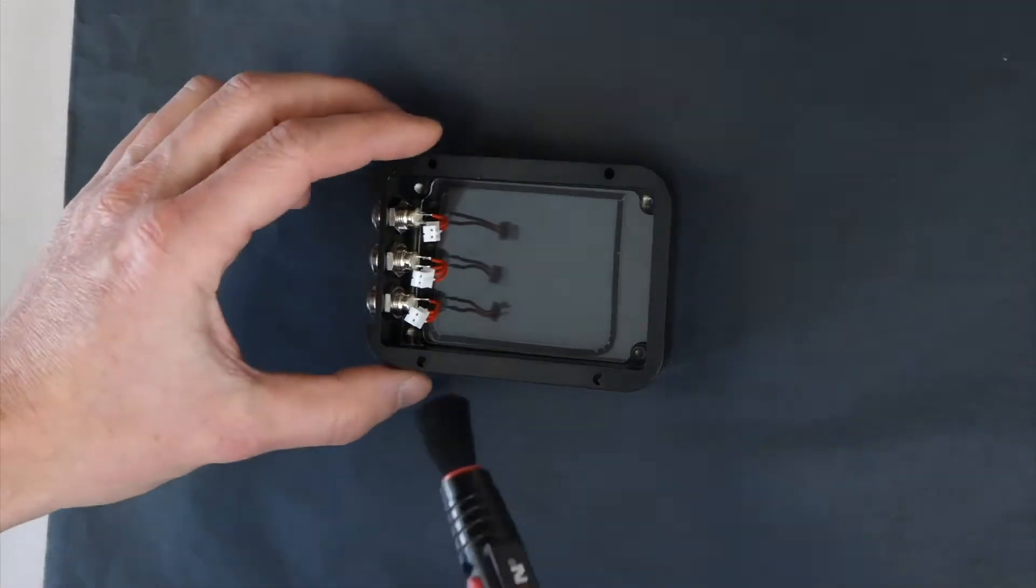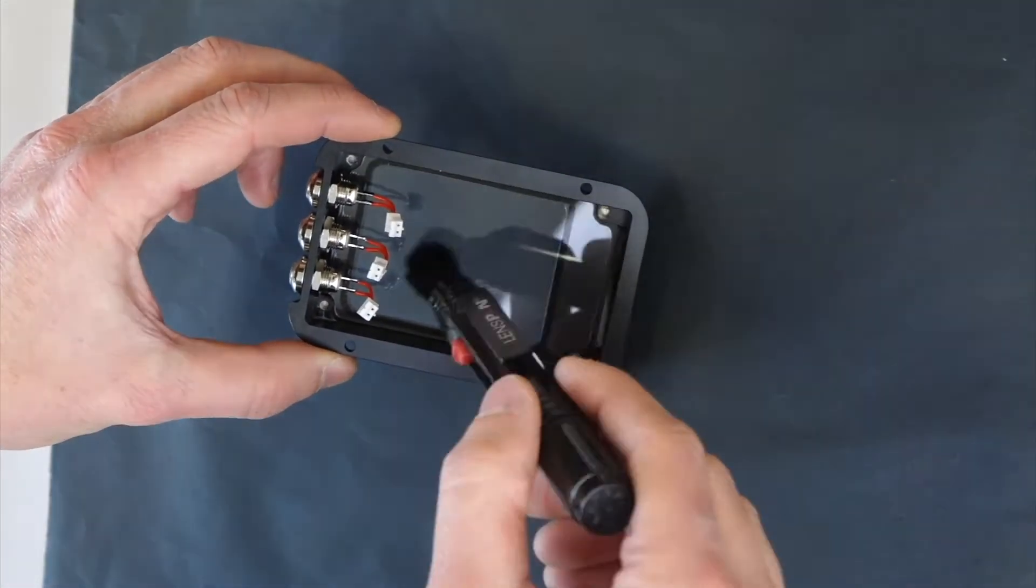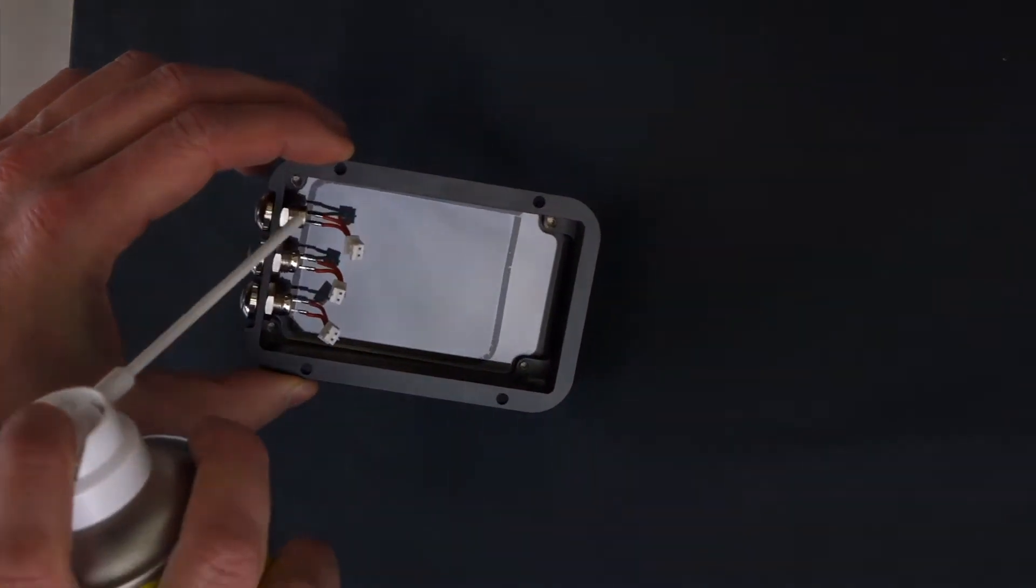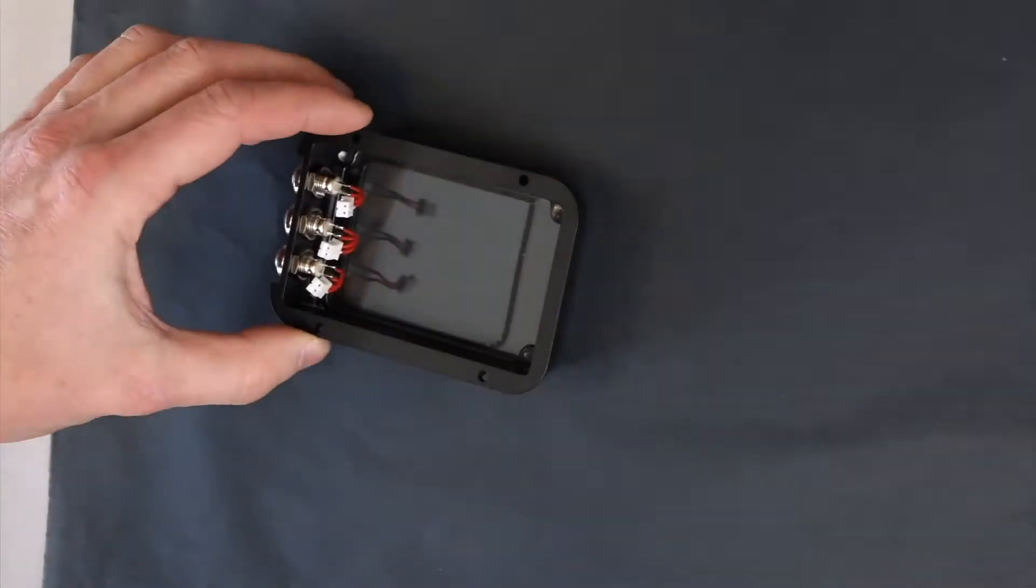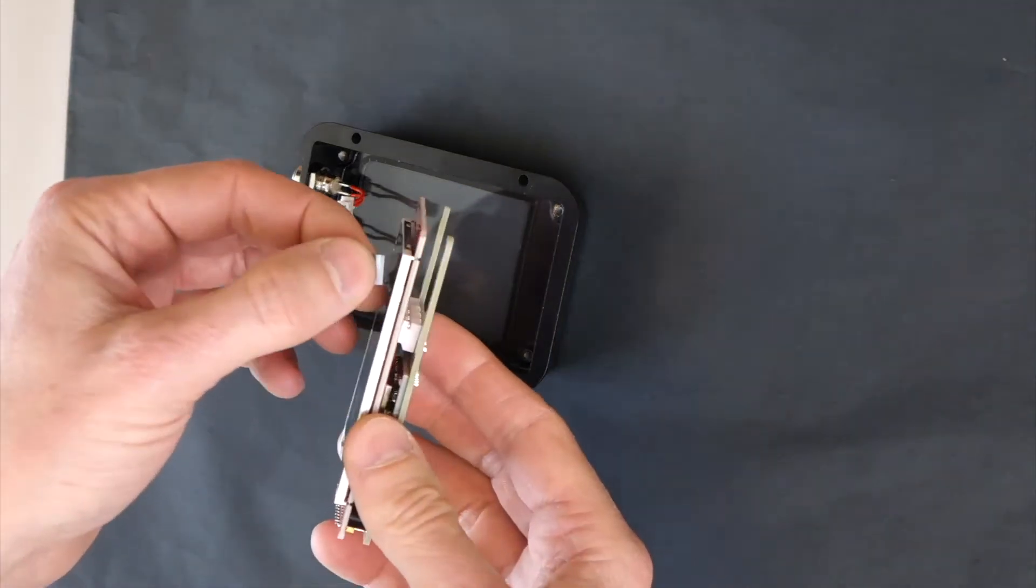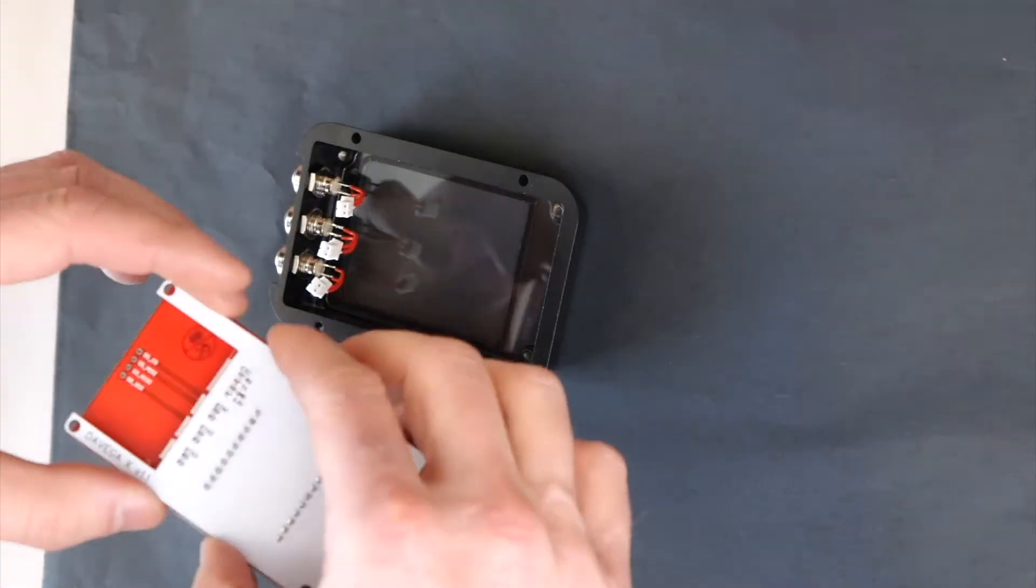Before you put the display in, clean the dust from the inside of the screen protector using a fine brush or compressed air. Then remove the film from the display and put the display into the housing.